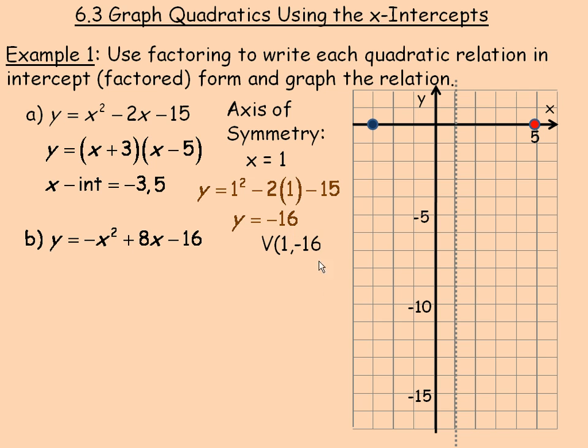That means that the vertex has an x coordinate of 1 and a y coordinate of negative 16. So it's the point 1, negative 16. We plot that point down here. So that's the vertex. These are the intercepts and so the parabola would have to look like this.